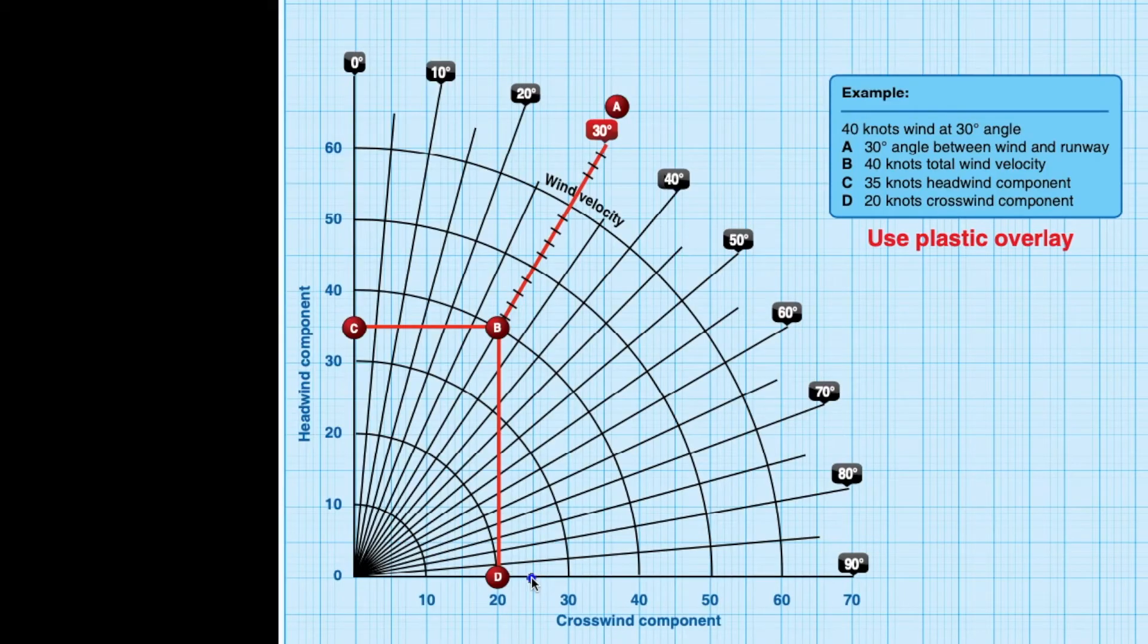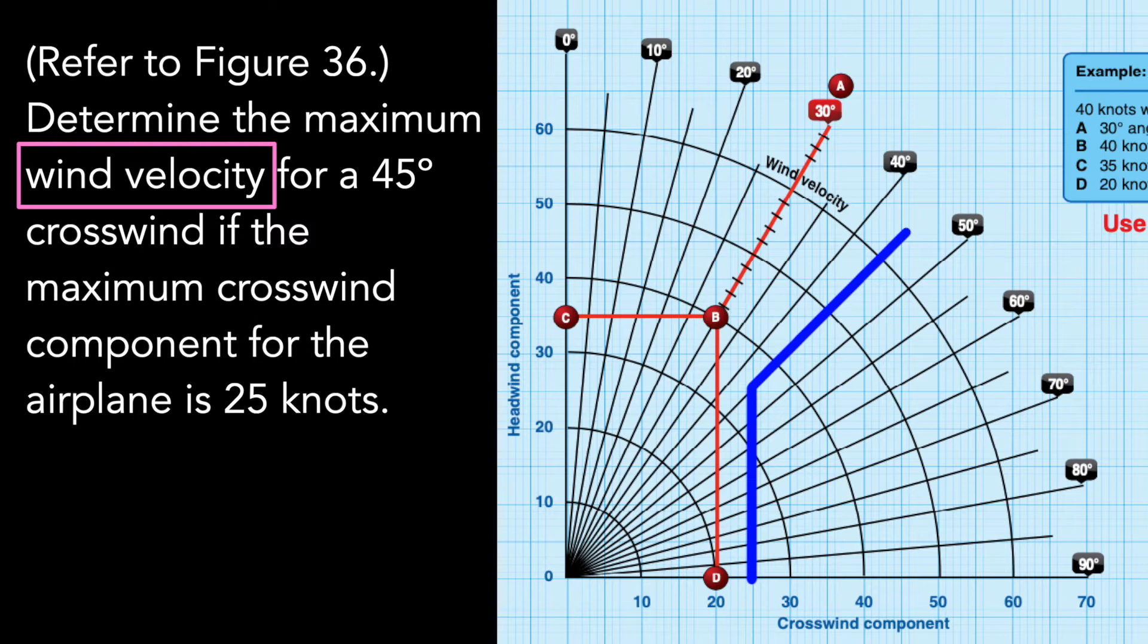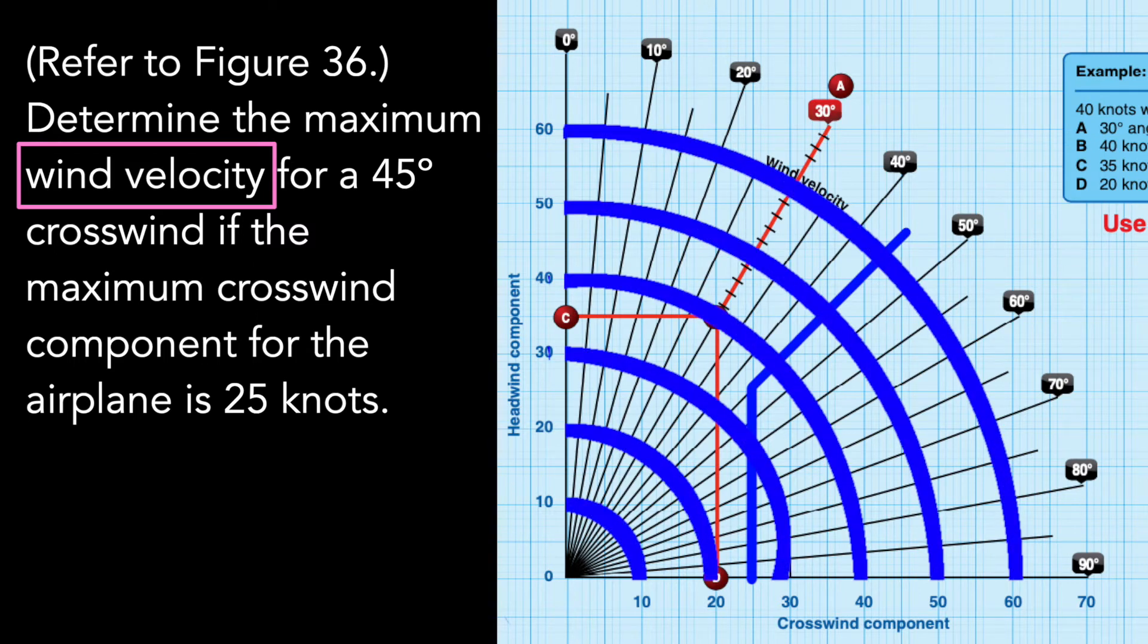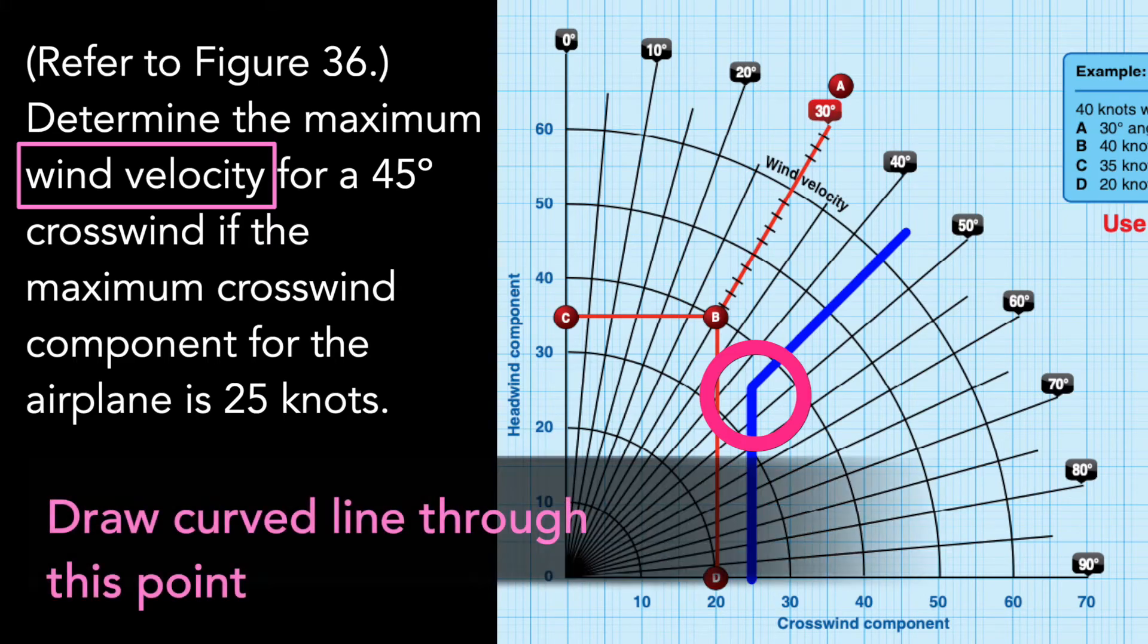Next we look for the 45 degree crosswind angle. We track up from our 25 knot crosswind limit and come together to form a point with the 45 degree line. Since the question asked about wind velocity, we need to refer to these curved lines.